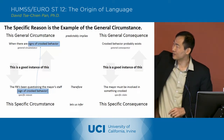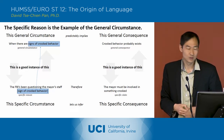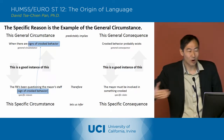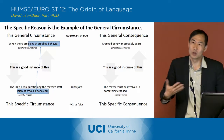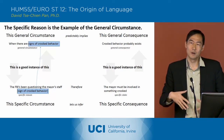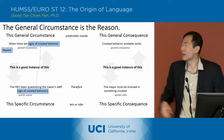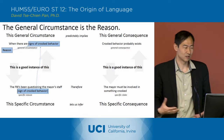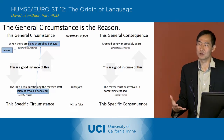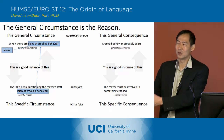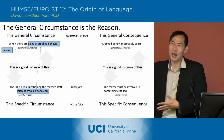They note that 'FBI questioning the mayor's staff' is a sign of crooked behavior — that's down at the bottom — but they've also put it up at the top as the general circumstance we're looking for in order to conclude the claim. So essentially we've got the reason: when we see signs of crooked behavior, like when we see wetness and conclude there's been rain, we conclude something crooked happened.